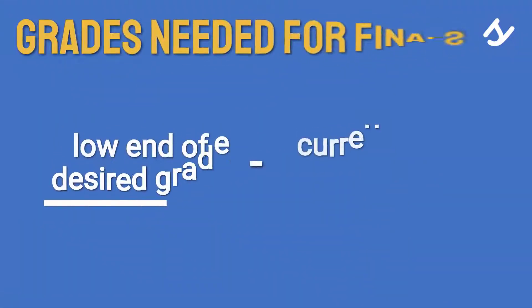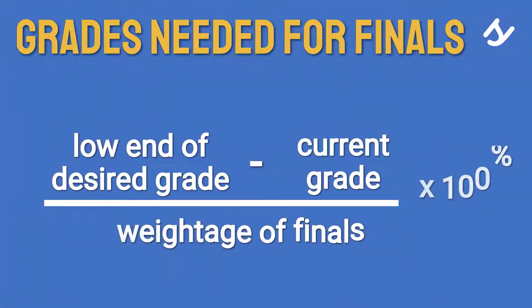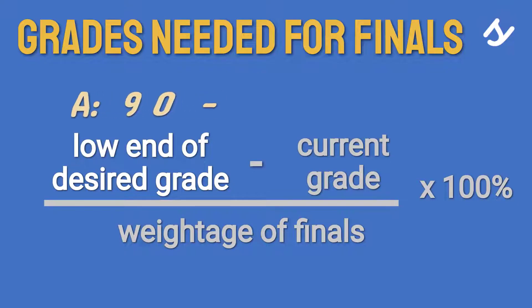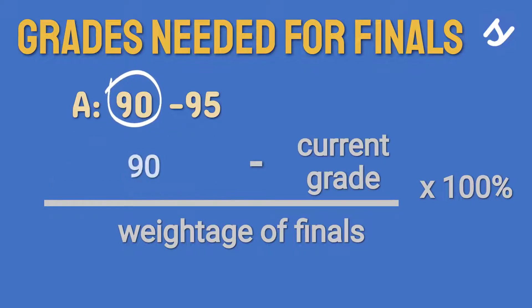Here is a simple formula that you can use. You will need three values: the low end of your desired grade. Say you're going for an A and the range for A is 90 to 95. The low end is then 90.